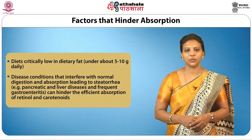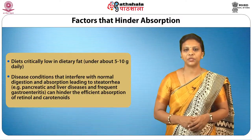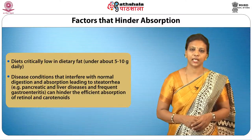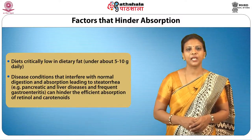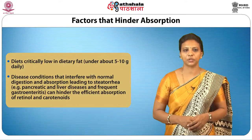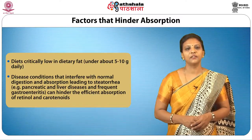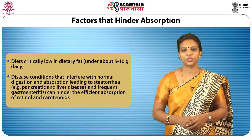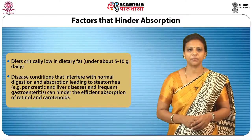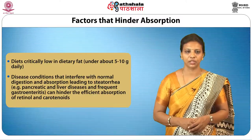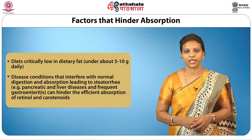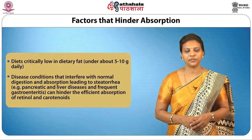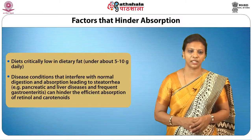Diets critically low in dietary fat — probably under 5 to 10 grams daily — or disease conditions that interfere with normal digestion and absorption leading to steatorrhea can hinder efficient absorption of retinol and carotenoids. Free carotenoids and retinols integrate into micelles and are absorbed across the brush border into the enterocyte plasma membrane by passive diffusion. Within the enterocyte, precursors of vitamin A are converted to active forms of the vitamin, with as much as 70 to 90 percent of retinol absorbed in the intestine.